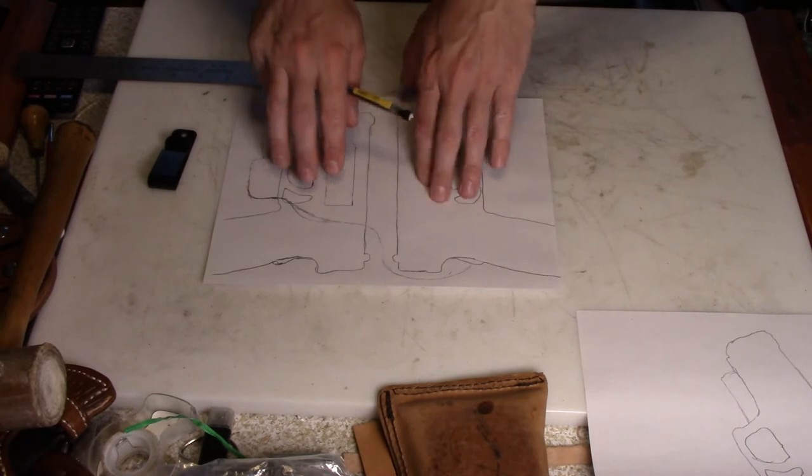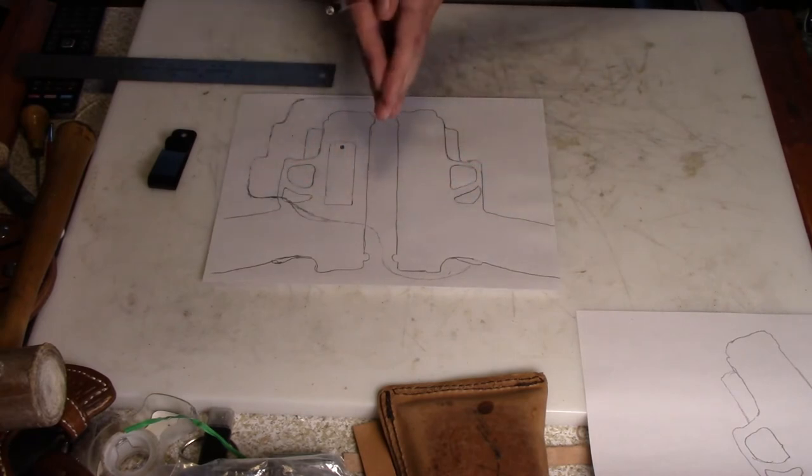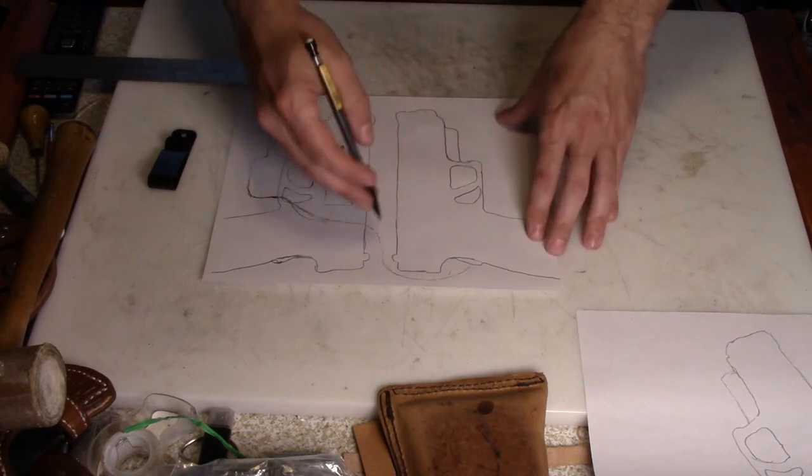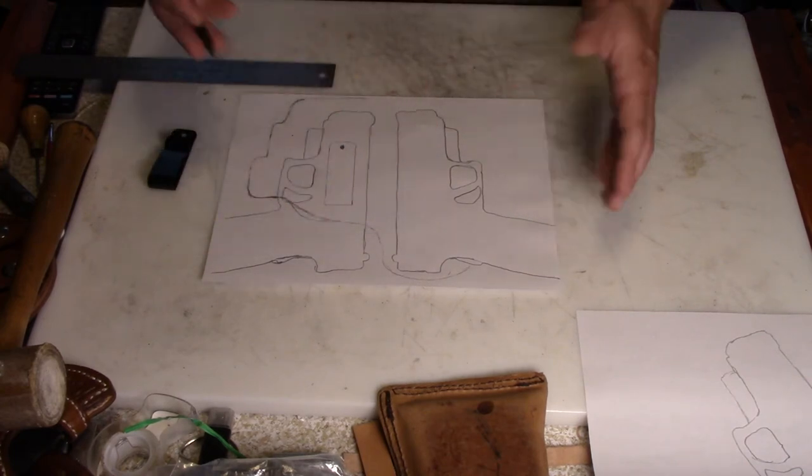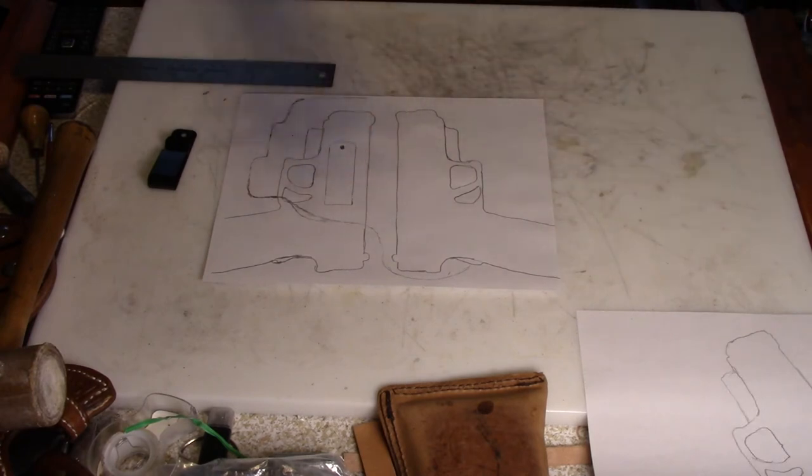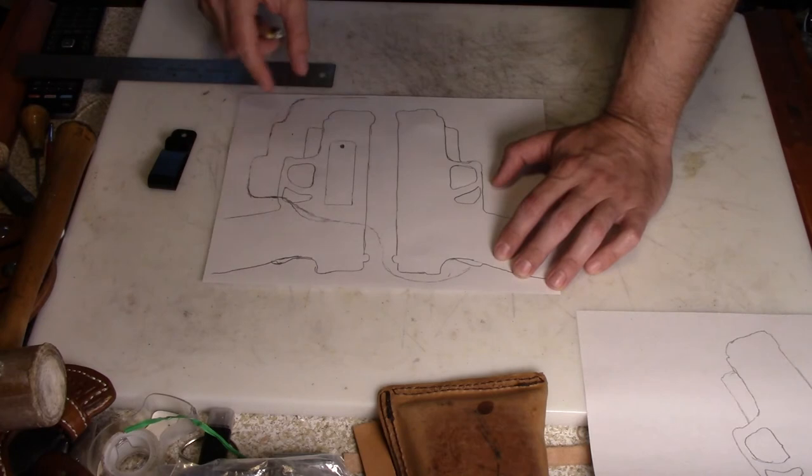Right now if I considered this to be the grain surface of leather and I folded it, this would actually be a left-handed holster and I need to make it right-handed. I could have been drawing it the other way around, but it doesn't matter because you just turn your pattern over and then it's right-handed.